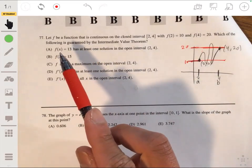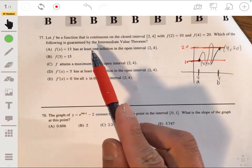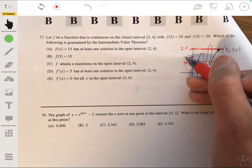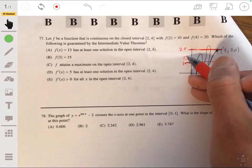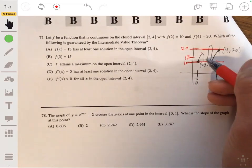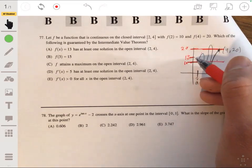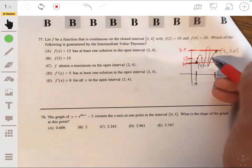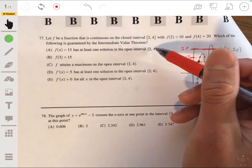It's going to have to at some point be the values between 10 and 20. So a says f(x) = 13 for at least one solution in the open interval (2, 4). So yeah, it has to pass through 13 at some point. We don't know exactly which value. It could be 2.1, it could be 3, 3.9. It doesn't matter. It just has to get passed through 13 at some point. It could actually pass through more than once.